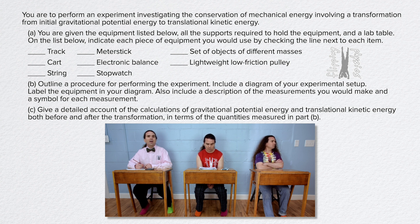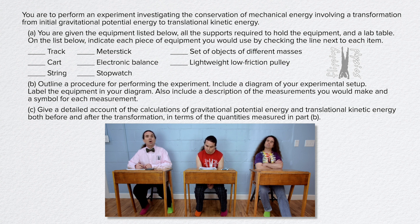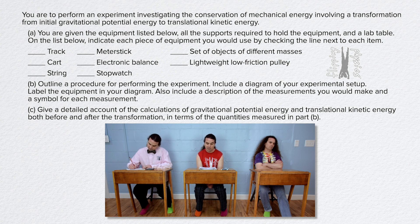indicate each piece of equipment you would use by checking the line next to each item: track, meter stick, set of objects of different masses, cart, electronic balance, lightweight low friction pulley, string, and stopwatch. Part B: Outline a procedure for performing the experiment. Include a diagram of your experimental setup. Label the equipment in your diagram. Also include a description of the measurements you would make and a symbol for each measurement. Part C: Give a detailed account of the calculations of gravitational potential energy and translational kinetic energy both before and after the transformation in terms of the quantities measured in Part B.